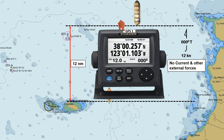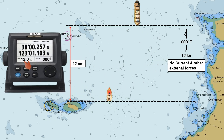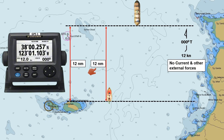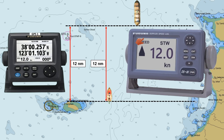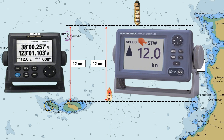Therefore, the GPS receiver displays a speed over ground of 12 knots. On the other hand, the parallel distance traveled by the ship relative to the floating boat, to determine speed through water, is also 12 nautical miles, as no external forces are acting on her. Therefore, the Doppler speed log displays a speed through water of 12 knots as well. If the water below the keel is between 1 to 200 meters, we can set our Doppler speed log to ground track so that it will display the ship's speed over the ground.